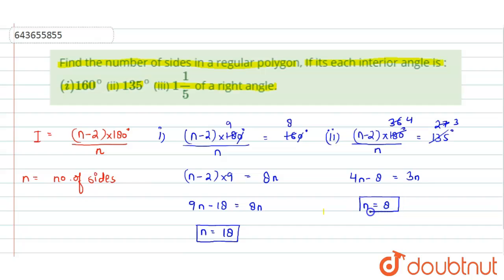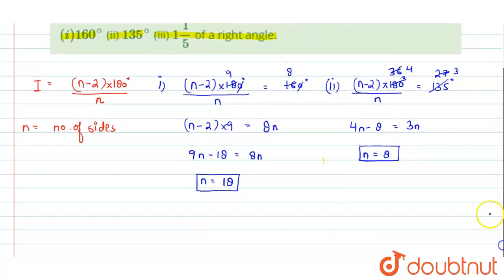Now for the third part, it is given here that value of interior angle is equal to 1 whole 1 by 5 of a right angle. So 1 whole 1 by 5 of a right angle and right angle is of 90 degrees. So multiply this by 90 degrees.